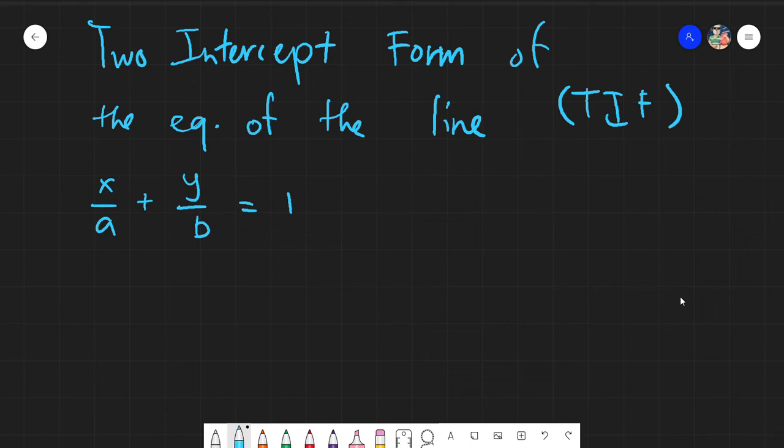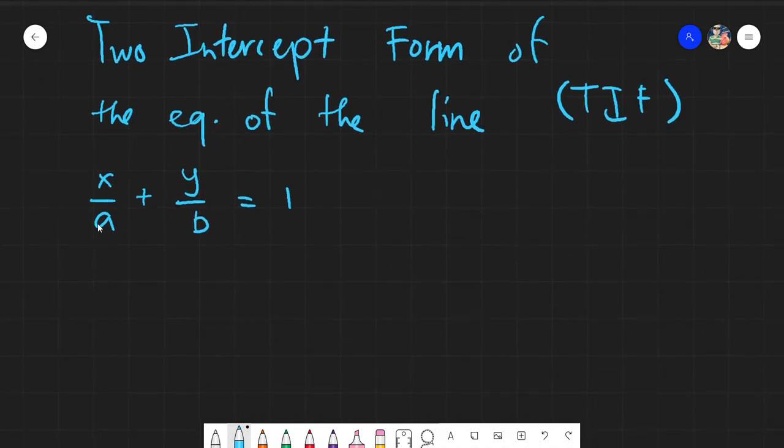Okay, salam alaikum warahmatullahi wabarakatuh, good day again everyone. Today we will be discussing the last form of the equation of the line, which is the two-intercept form. For me, this is the easiest one because it's just purely multiplication, and I will not be giving you any fractional values for this one because it would constitute a complex fraction.